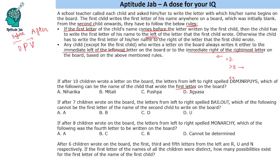Now let's check M. Anything before M should be on the left — those two follow the sequence — but J comes before M and is written on the right, so M is incorrect. For J: M comes after J, so M should have been on the right, but it is on the left side. So J is also not possible. We can knock out both these options.